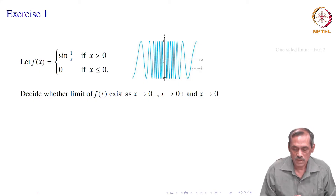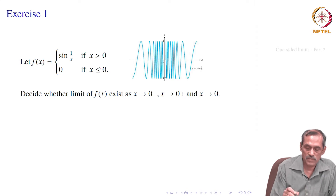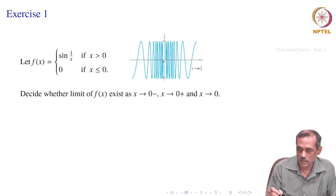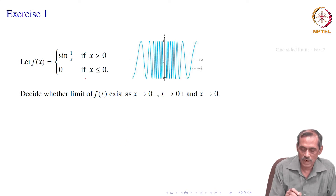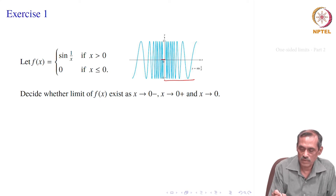Now, one exercise: say here f(x) is given to be sin(1/x) if x is greater than 0, and 0 if x is less than or equal to 0. Recall earlier we had done for f(x) equal to sin(1/x) only. We know that the limit does not exist. Sin(1/x) looks like this, but now this function is not exactly that. For x greater than 0 this side is alright, but the left side for x less than or equal to 0, the function is only 0.